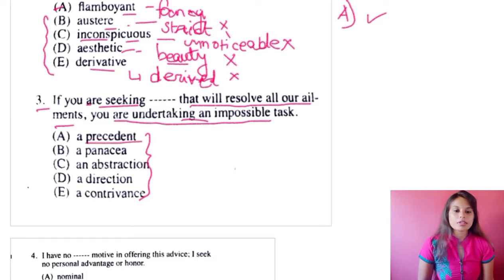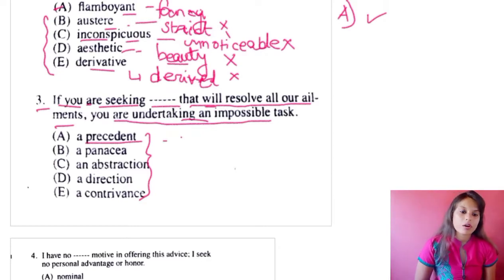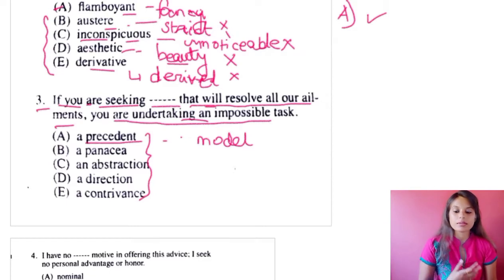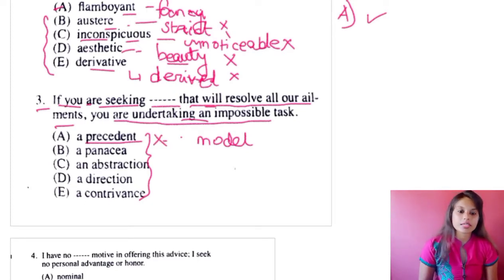First option: 'a precedent.' Precedent means a model, example, or pattern. You cannot seek a model or a pattern to resolve ailments; that doesn't make sense. So I'm crossing option A out.